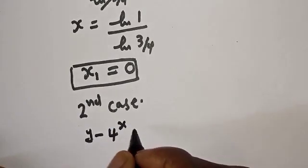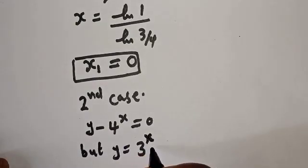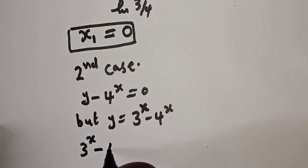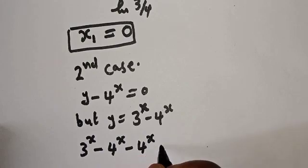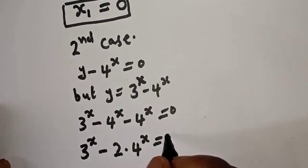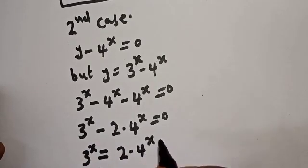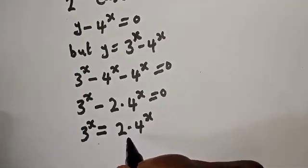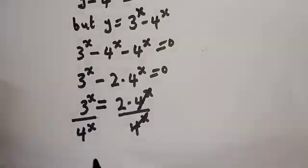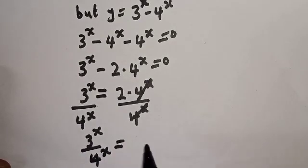Now let's consider the second case: y minus 4 raised to power s equals 0. Since y equals 3 raised to power s minus 4 raised to power s, we have 3 raised to power s minus 4 raised to power s minus 4 raised to power s equals 0. So 3 raised to power s minus 2 multiplied by 4 raised to power s equals 0. Bringing it to this side and dividing both sides by 4 raised to power s, we get 3 raised to power s over 4 raised to power s equals 2.